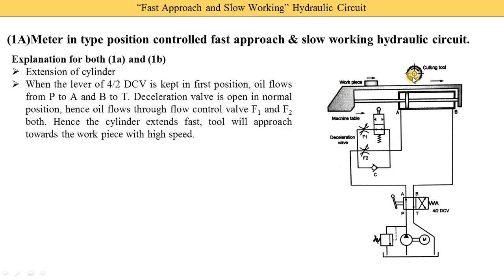The workpiece is far from the cutting tool, so to move the workpiece toward the cutting tool, fast speed is required. Oil is supplied from both flow control valves. Oil coming from the A-port has three options: go through F1, F2, or the check valve. Since the check valve is only used during retraction, for the fast approach, oil is supplied through both F1 and F2. F2 has a fixed flow rate, but F1 is switched on or off by a cam-operated 2/2 directional control valve. When the machine table portion presses this cam valve, F1 is closed.